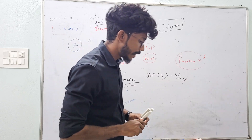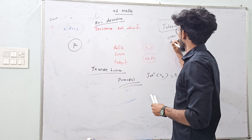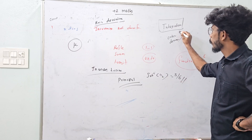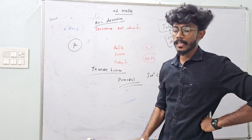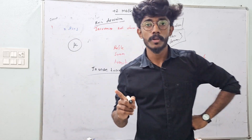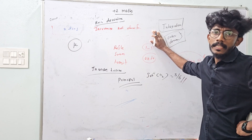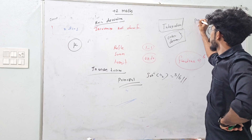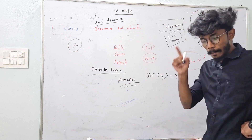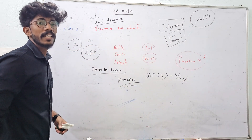Let's go to the differential equations chapter. Let's learn order and degree — one degree, one order. I will read it in the description. First, we'll talk about linear differential equations. Let's go to the Linear Programming Problem chapter — LPP.